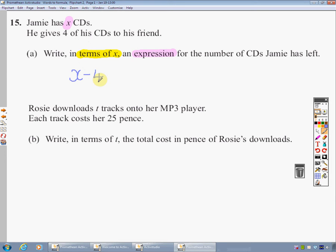Rosie downloads t tracks from her MP3 player. So this time we're using the letter t to represent the number of tracks. In this case they've helped us a bit - they've used t for tracks which just helps your brain think what's going on. They don't always be that kind. Like here we could have had c for CDs but we actually had x. Anyway, it's t for tracks onto her MP3 player. Each track costs her 25p. Write in terms of t the total cost in pence of Rosie's downloads.